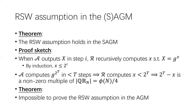We also have a complementary result: it is impossible to prove the RSW assumption in the plain AGM. These two results combined show a separation between the AGM and the strong AGM.